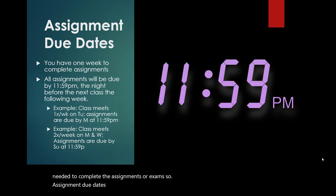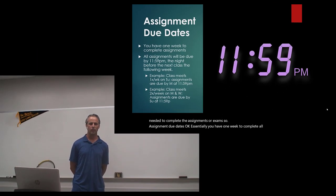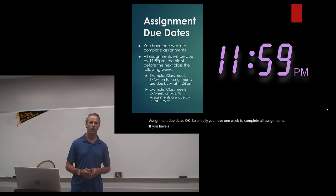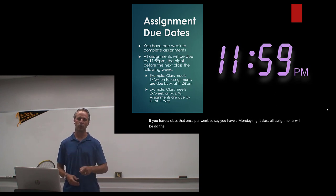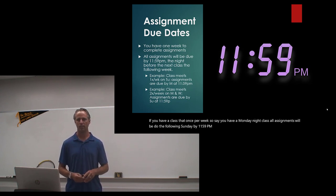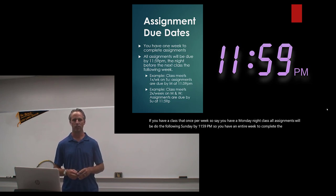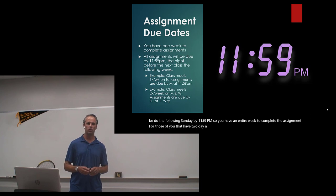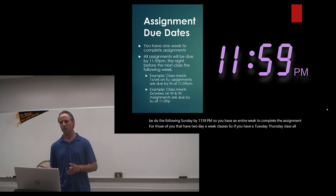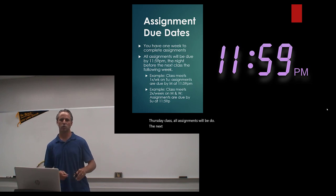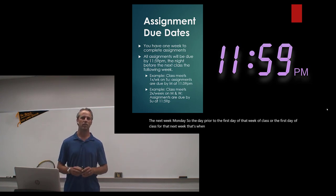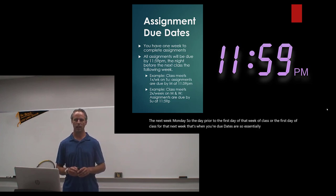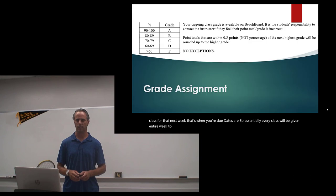Assignment due dates: essentially you have one week to complete all assignments. If you have a class that is once per week — say you have a Monday night class — all assignments will be due the following Sunday by 11:59 p.m. For those of you that have two-day-a-week classes, such as a Tuesday-Thursday class, all assignments will be due the next Monday — the day prior to the first day of class for that next week. So essentially every class will be given an entire week to complete assignments.